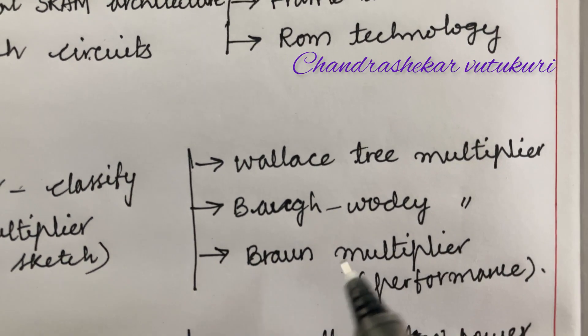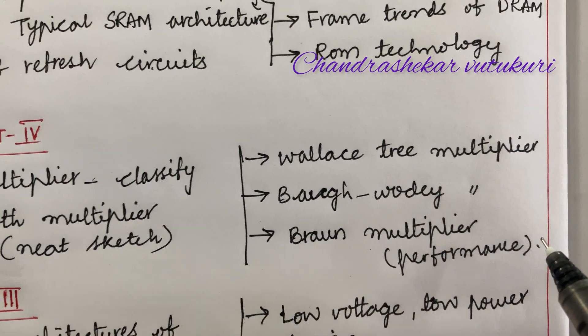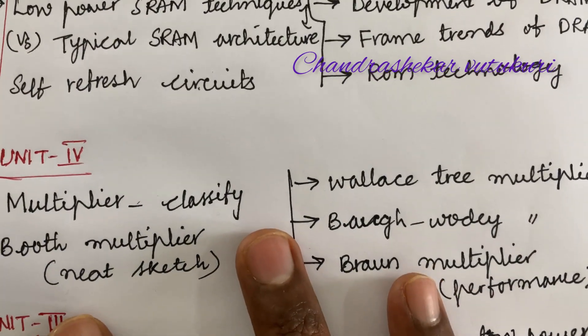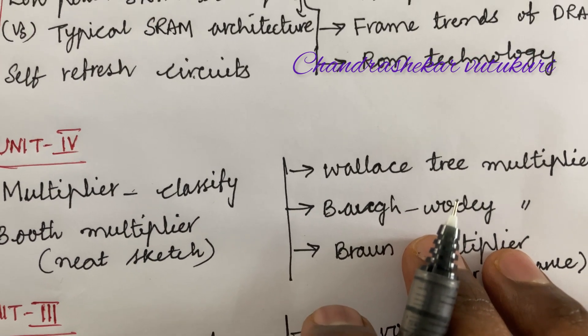Baugh-Wooley as well as Braun multiplier and its performance along with neat sketch is said to be one of the topmost questions from Unit 4. If you work out these questions, you are going to get 10 out of 10 in the long questions as well as 5 marks in the short questions.